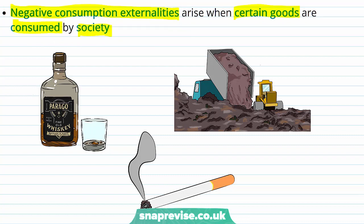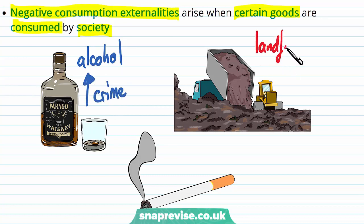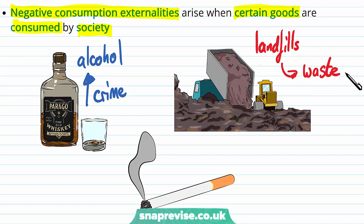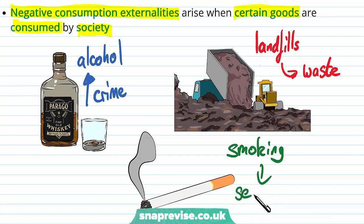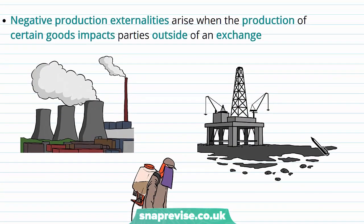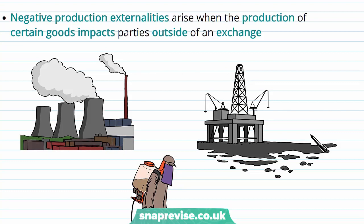Negative consumption externalities arise when certain goods are consumed by society. With alcohol, we might see increased crime. Landfills lead to more waste dumping and accumulation. Smoking creates external costs for non-smokers through secondhand smoke, leading to further health costs beyond those who are actually smoking the cigarettes.